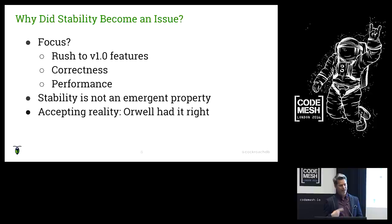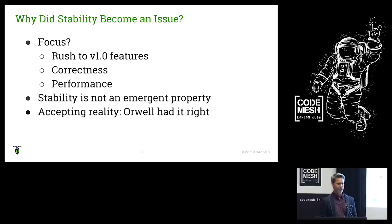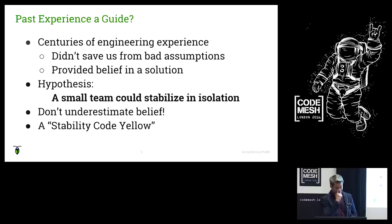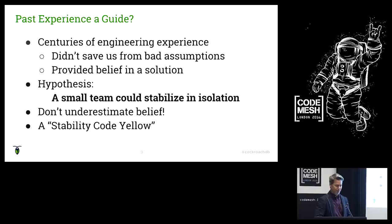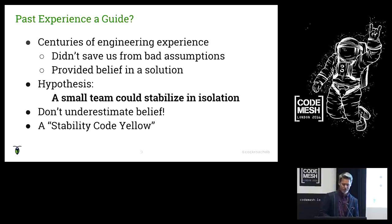The biggest failing we had was the length of time it took to realize we needed to do something different. Orwell said the greatest struggle is sometimes to see what's in front of one's nose — that certainly proved true for us. We had a very experienced team — about 20 people with centuries of engineering experience, many of them lifers with 20-plus years. We'd worked on systems as complicated as Cockroach. But this didn't save us from the bad assumption that stability would be an emergent property.